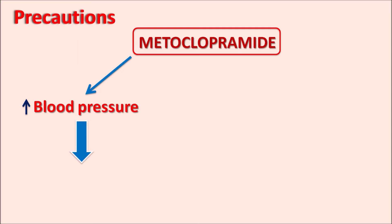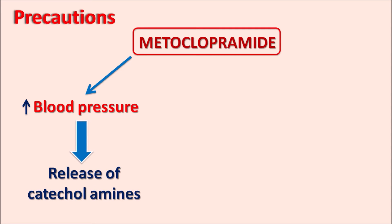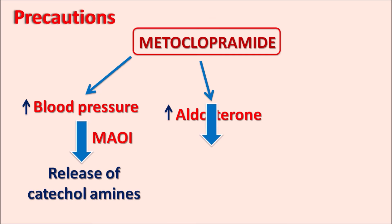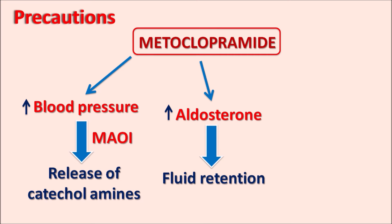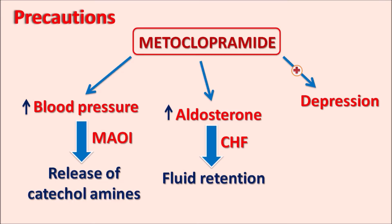Metoclopramide can also increase blood pressure due to increased release of catecholamines, and this hypertension is further worsened when combined with MAO inhibitors — producing severe hypertension. This drug can also increase aldosterone secretion, resulting in fluid retention, which is particularly troublesome in patients with congestive heart failure. Additionally, metoclopramide can increase depressive symptoms, which should be carefully monitored.